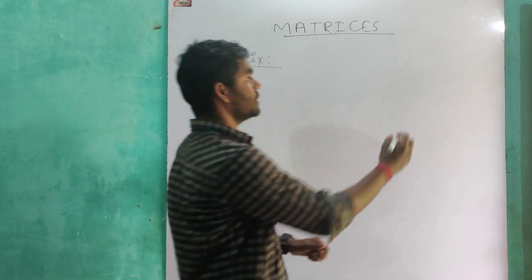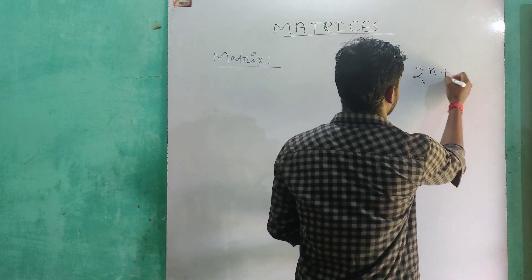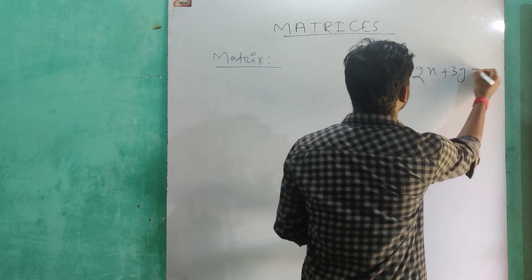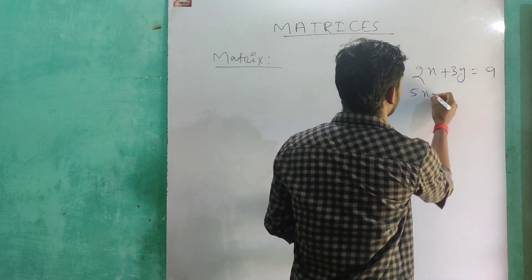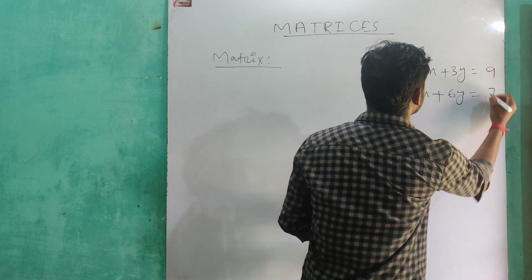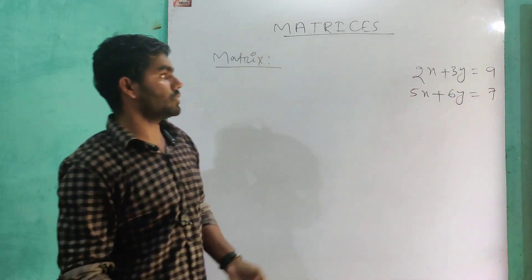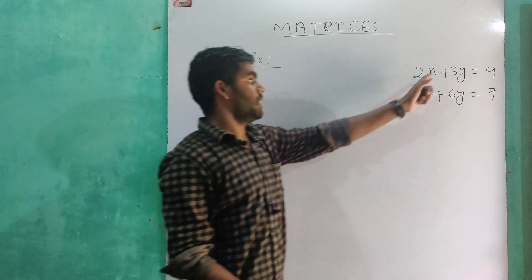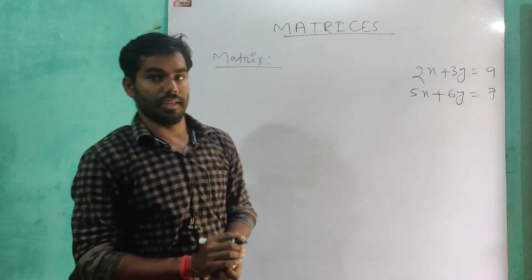What is a linear equation? For example: 2x plus 3y equals to 9, and 5x plus 6y equals to 7. These are two linear equations with variable degree one.